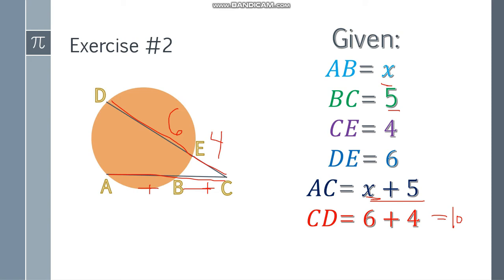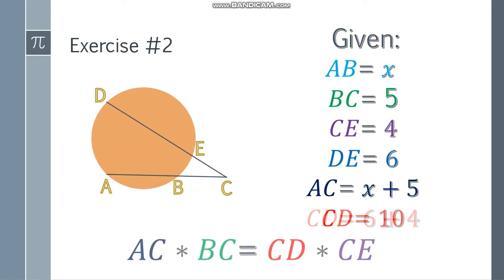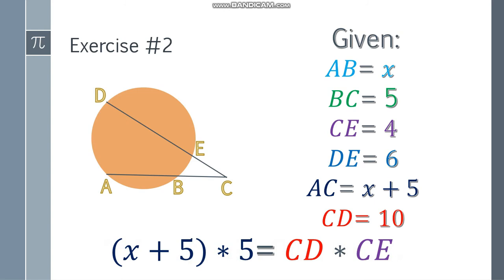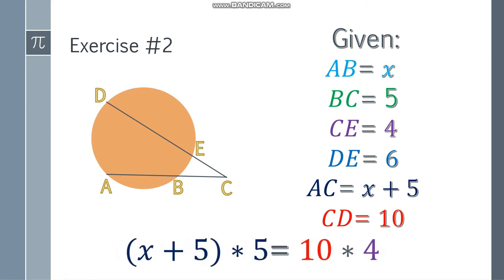Since we have both whole secants, we can solve the problem. Using the formula, AC is x plus 5, multiply by BC which is 5, equals CD which is 10 times CE which is 4. Simplifying: x plus 5 times 5 equals 5x plus 25. 10 times 4 equals 40. Subtract 25 from each side: 5x equals 15. Divide both sides by 5, and x equals 3.